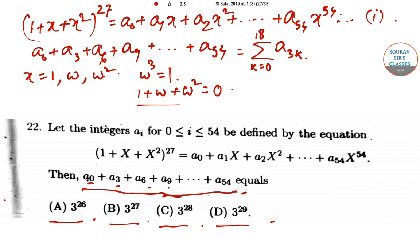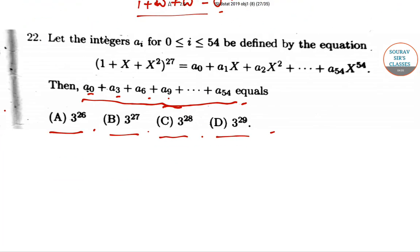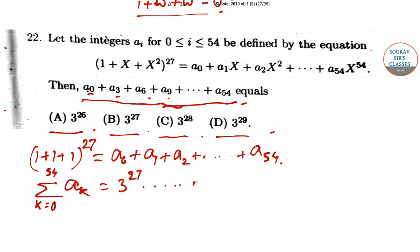Putting x = 1 in the equation: (1 + 1 + 1)^27 = a₀ + a₁ + a₂ + ... + a₅₄. So the summation of aₖ for k = 0 to 54 equals 3^27. Let this be equation number 2.